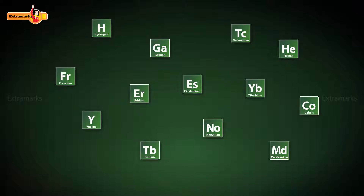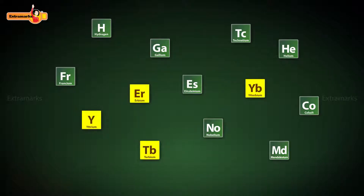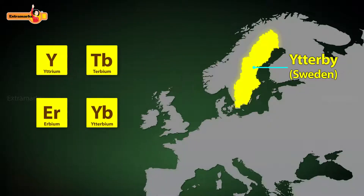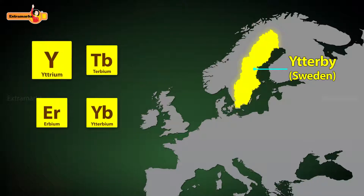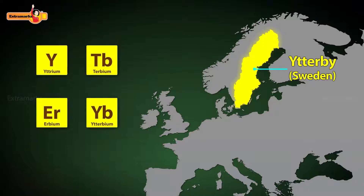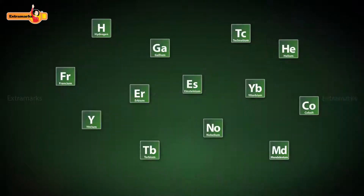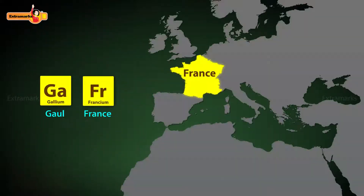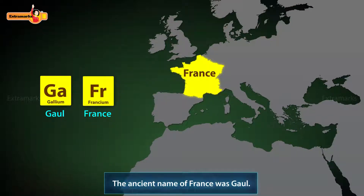For example, four elements are named after Ytterby, a village in Sweden, as they were isolated from the rocks found near it. They are Yttrium, Terbium, Erbium, and Ytterbium. Gallium and Francium are named after France.